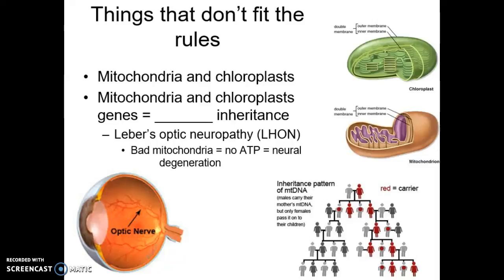Two exceptions to the rules are the mitochondria and the chloroplast. In animals, we contain the mitochondria — the little powerhouse in our cell, the little engine that produces ATP. In producers, they contain chloroplasts, their primary energy powerhouses for making ATP. What we see with both the mitochondria and chloroplasts is that they actually have DNA — a separate DNA code that is not found in the nucleus.